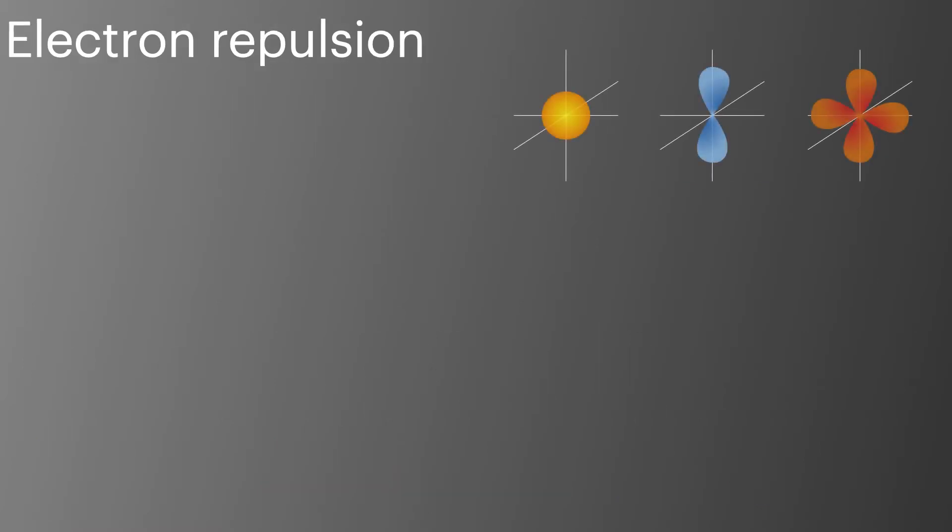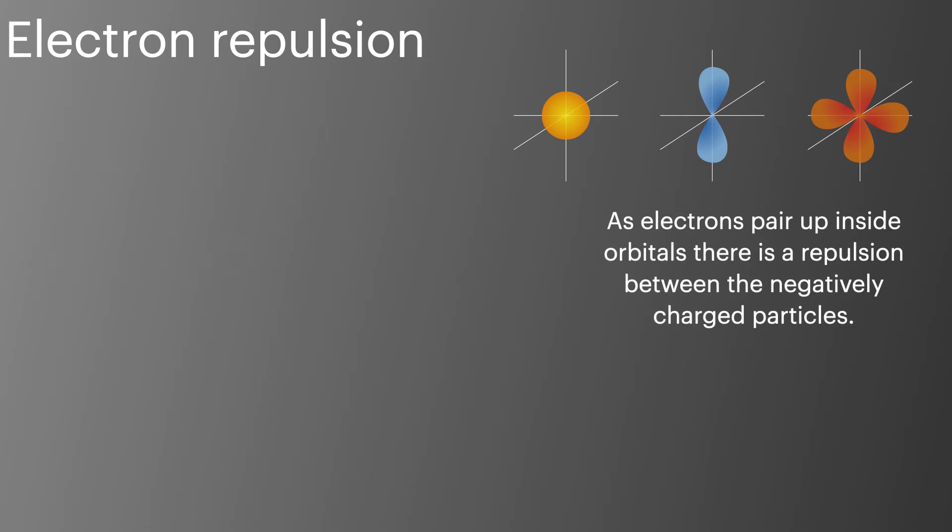All electrons are held in orbitals. If you're unsure about orbitals go and check out my video on electron configuration where I explain it all. As these electrons pair up inside the orbitals they repel each other. This repulsion makes it easier to remove the highest energy electron.